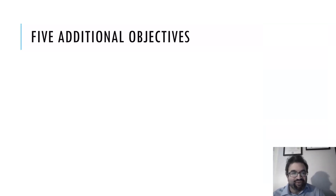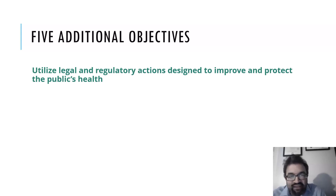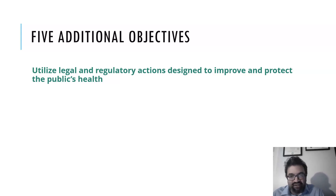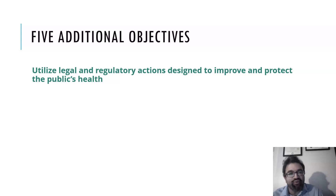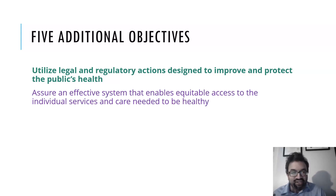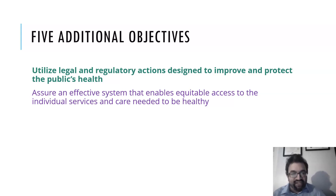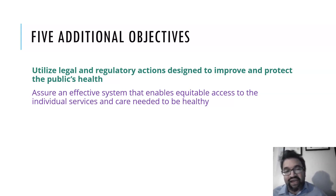What are the five additional objectives? The first is to utilize legal and regulatory actions designed to improve and protect the public's health. This connects to the end of the previous set of objectives. By using legal and regulatory actions, you are assuring an effective system that enables equitable access to the individual services and care needed to be healthy. Equitable access is extremely important because when there are disparities in access and poor communities don't have as much access, that inevitably leads to poor health outcomes.